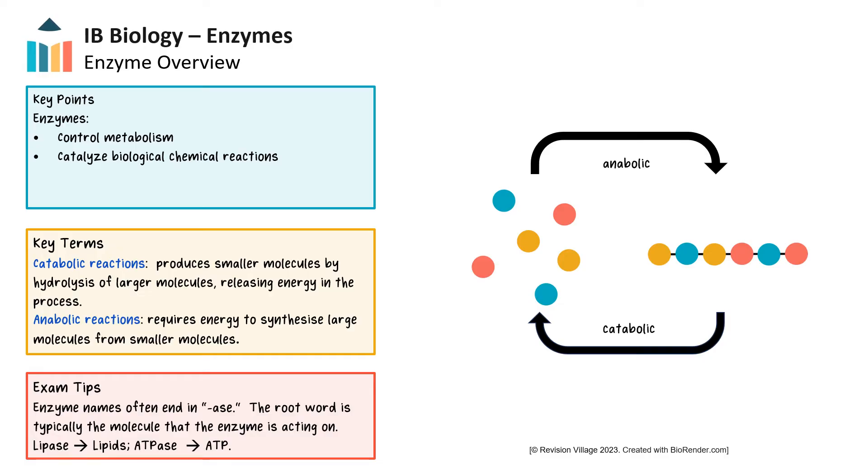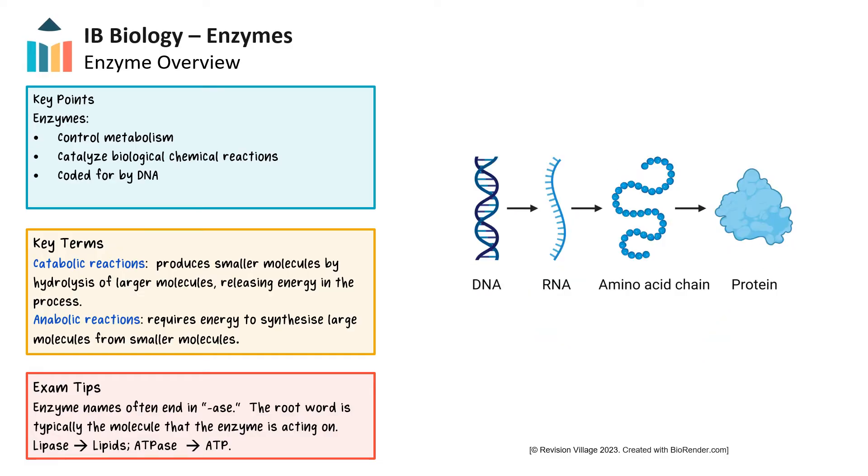Enzymes are a category of proteins so they are coded for by DNA and their production occurs through protein synthesis. Enzyme production via protein synthesis is often stimulated by the environment, so the body does not build enzymes it does not currently need. For instance, lactose, a milk sugar, is digested and broken down by the enzyme lactase. When lactose is present in the digestive tract, it signals the cells surrounding the small intestine to begin producing lactase.